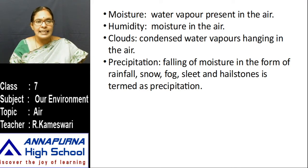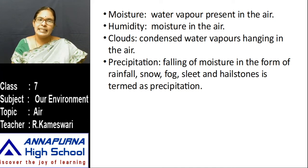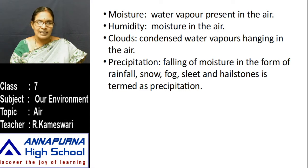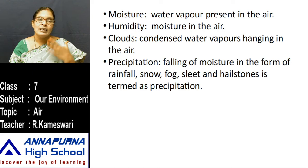Clouds — condensed water vapor hanging in the air is called clouds. Precipitation — falling of moisture in the form of rainfall, snow, fog, sleet, and hailstones is called precipitation. Precipitation means water reaches the earth in different forms: rainfall, snow, fog, sleet, and hailstones.